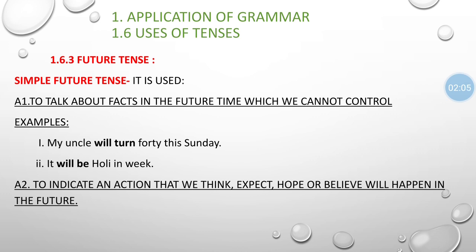Simple future tense is used to talk about facts in future time which we cannot control — meaning uncontrollable time or action. For example: 'My uncle will turn 40 this Sunday' — we cannot stop or control time. Another example: 'It will be Holi next week.' Such uncontrollable future actions are indicated by simple future tense.